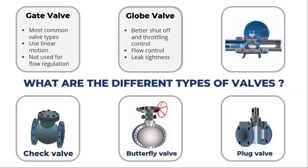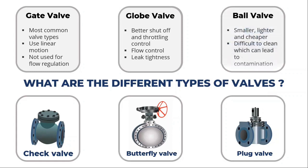A hollow ball is used by a ball valve to start or stop fluid flow. The valve handle can be used to pivot the perforated ball — the fluid flows through when the ball's hole is pointed at the flow entrance. When compared to gate valves of the same size and rating, ball valves are more compact, lighter, and less expensive.